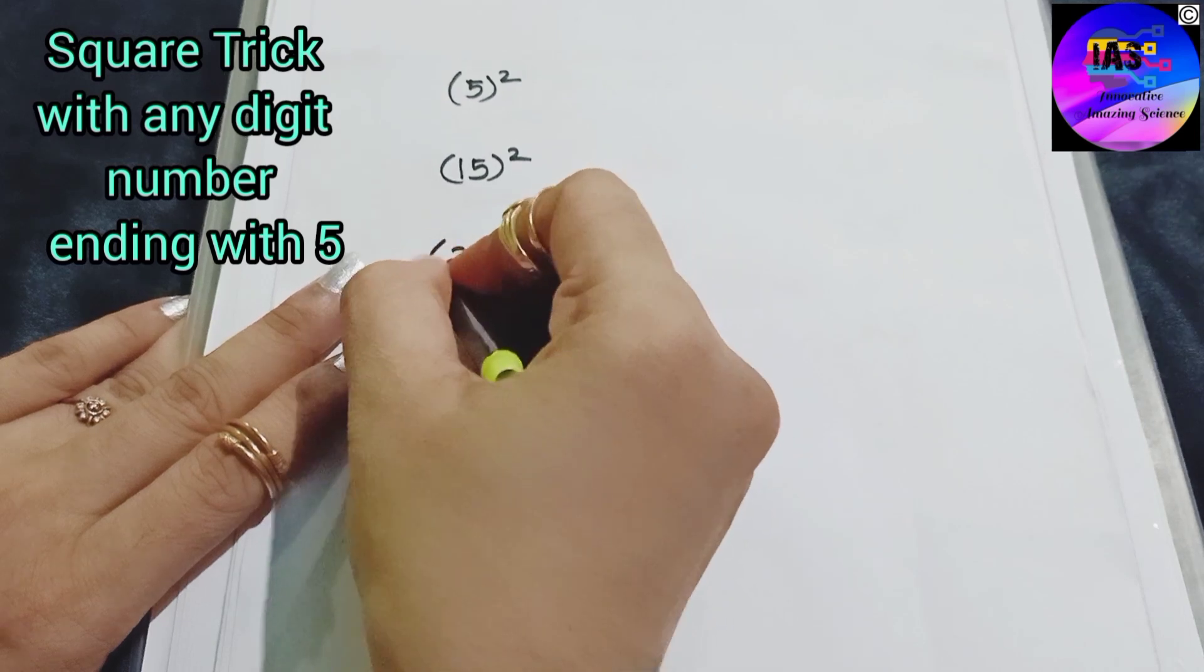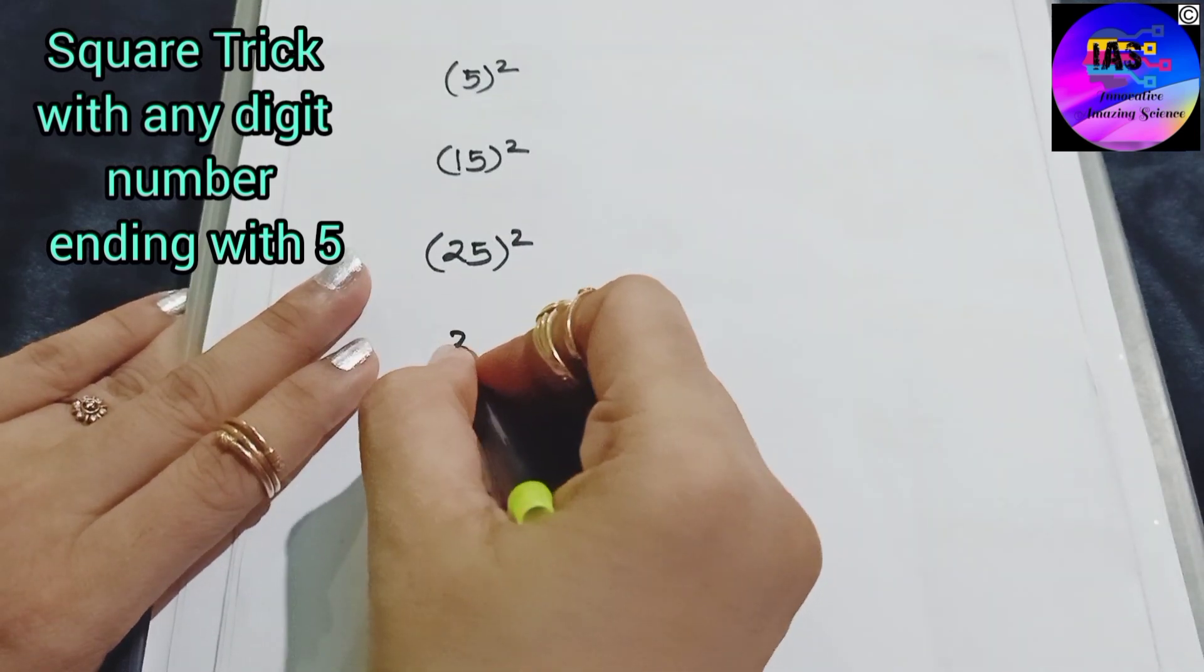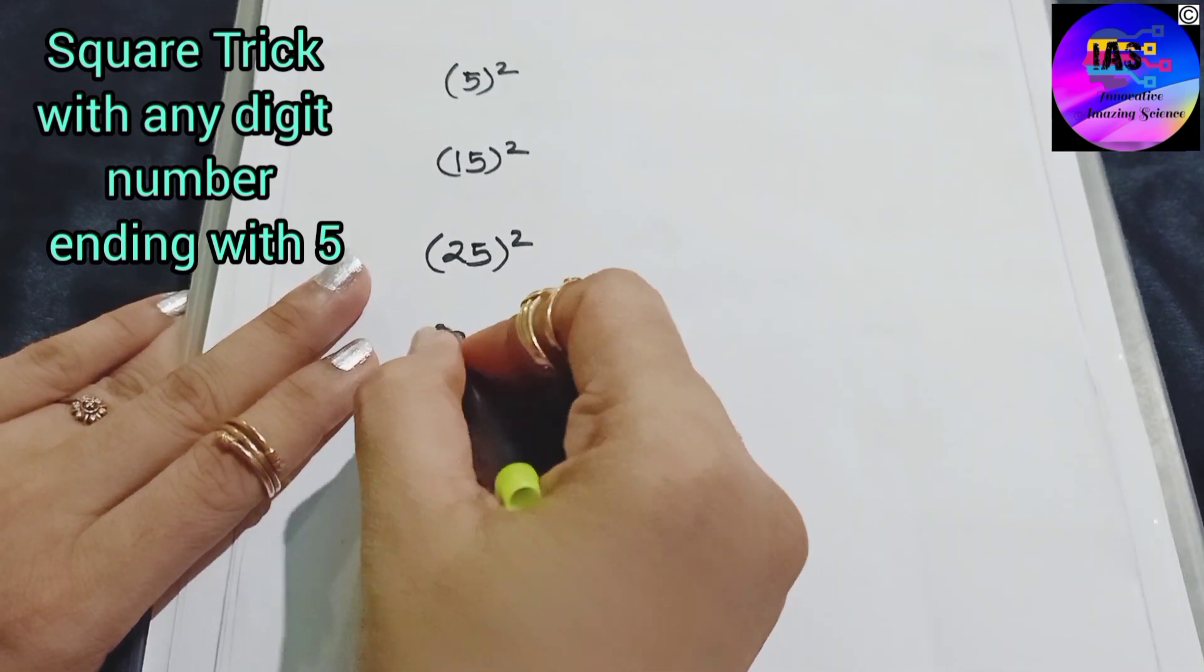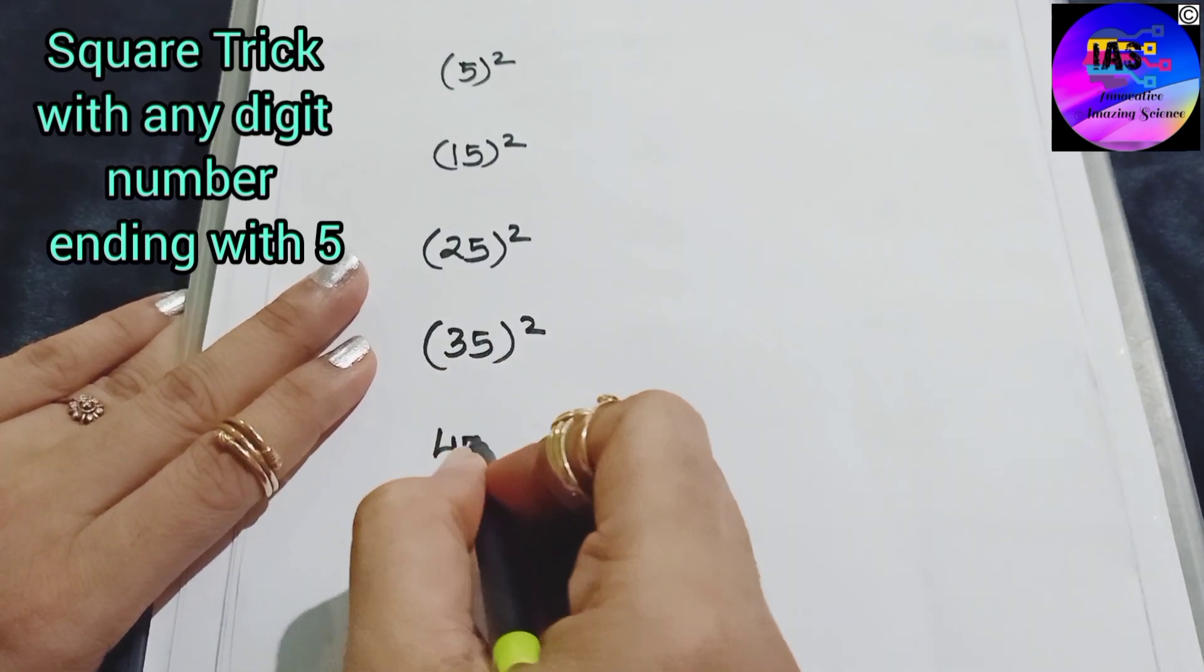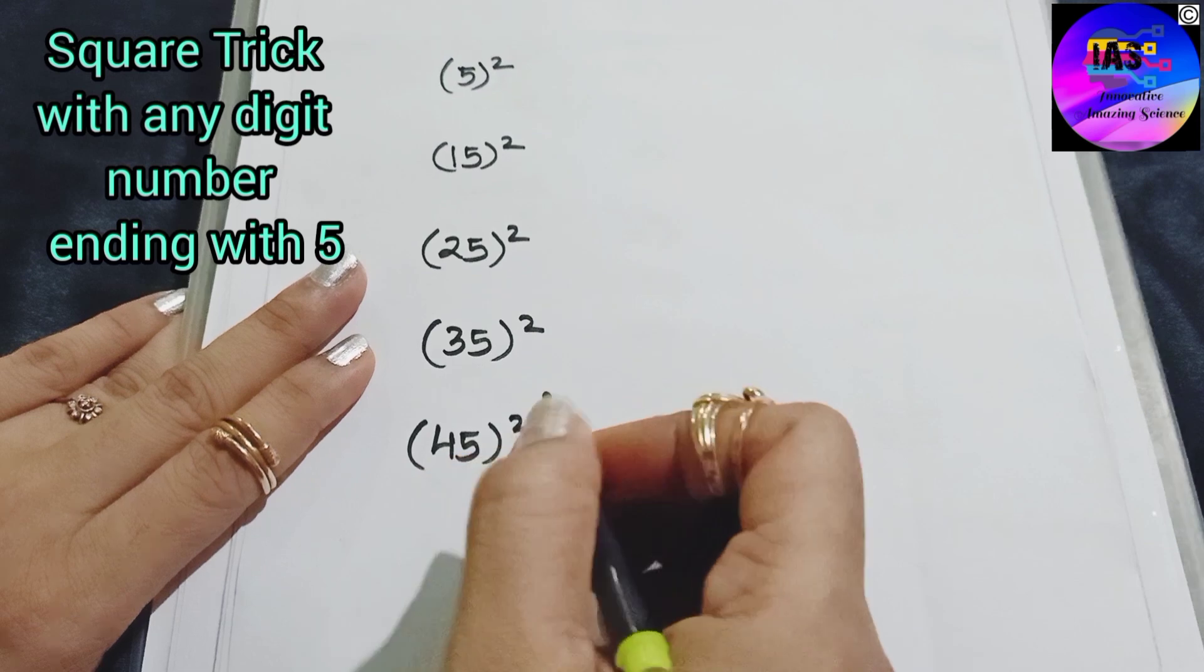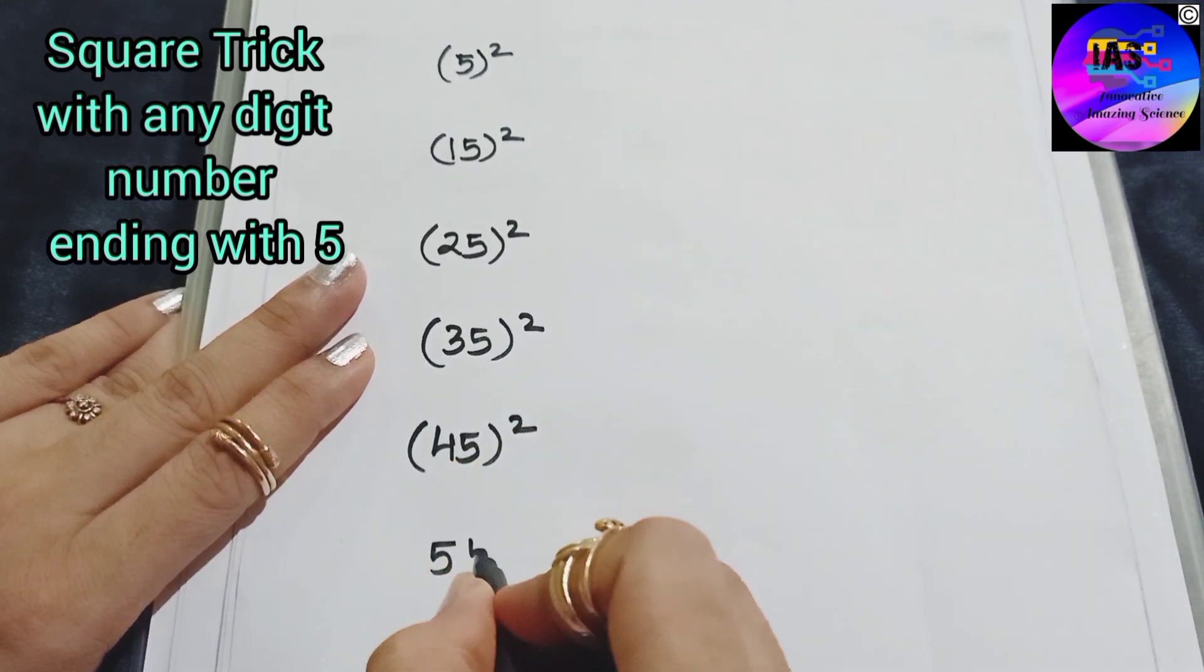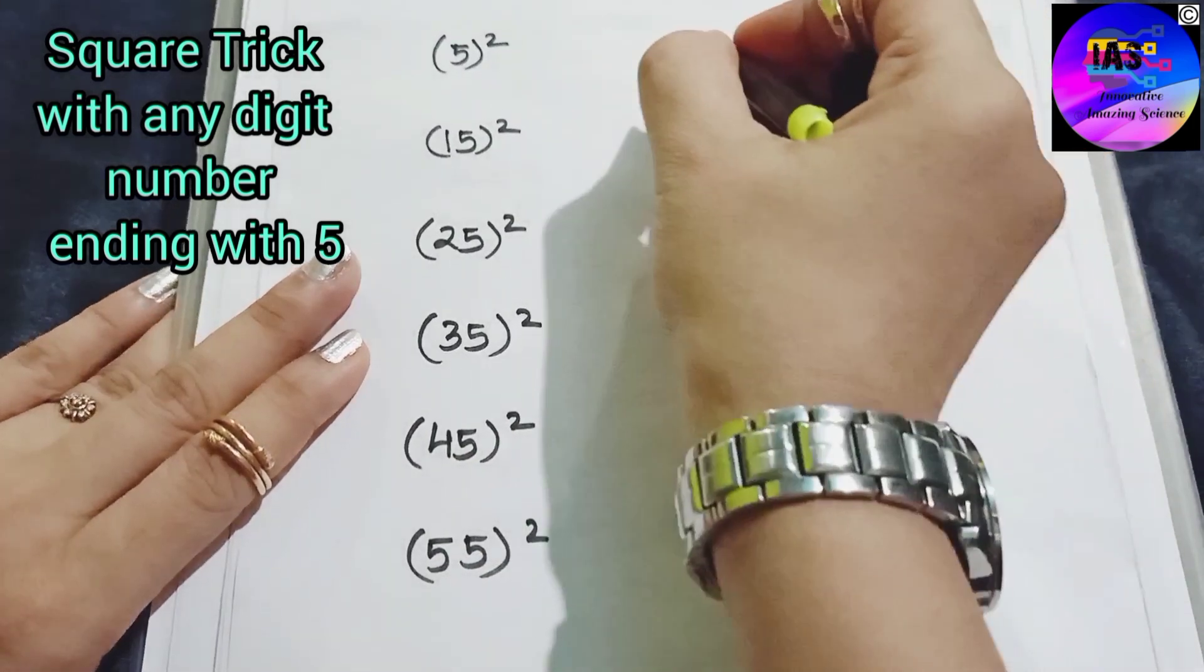So likewise we will write the numbers whichever you want to find the square, and you should remember that we should write such numbers which should end with 5 because this trick is related to that.